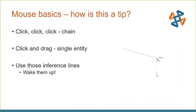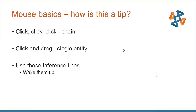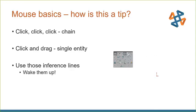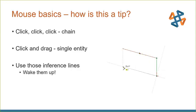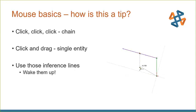Starting with the absolute basics of sketching — click, move the mouse, click, move the mouse creates a chain of connected entities. But one thing I come across frequently is that we forget you can also click, hold down the left mouse button, and drag a single entity at a time. Also, leverage those inference lines — the dashed lines that help you add relations on the fly when sketching. If you brush your mouse over or hover over another entity, you can capture those relationships on the fly.